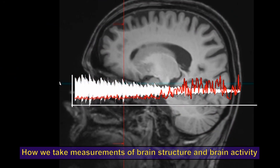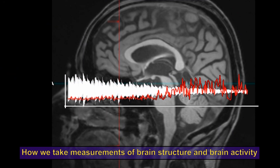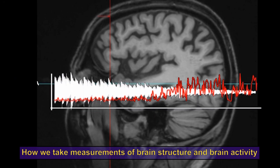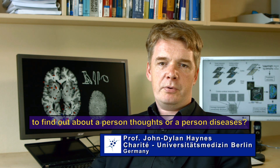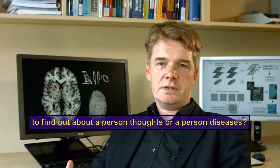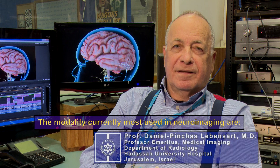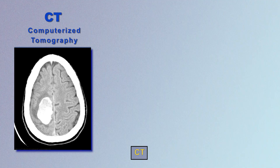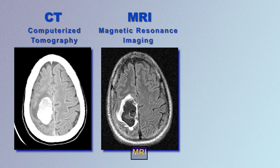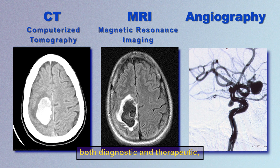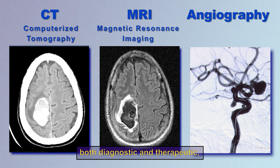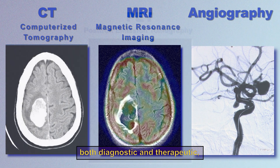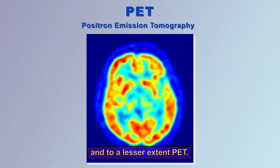How do we take measurements of brain structure and brain activity to find out about a person's thoughts or a person's diseases? The modalities currently most used in neuroimaging are CT, MRI and angiography, both diagnostic and therapeutic, and to a lesser extent PET.